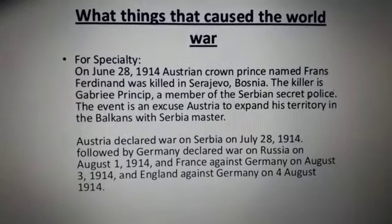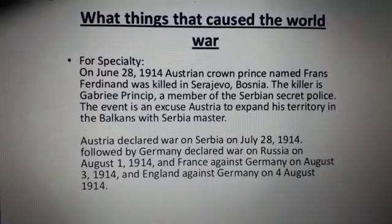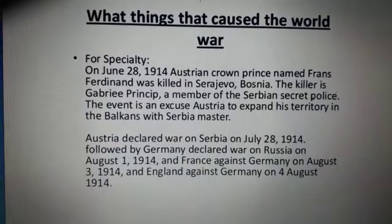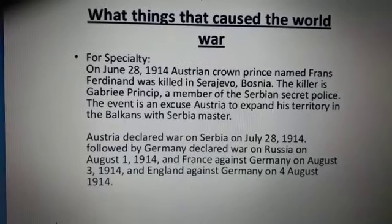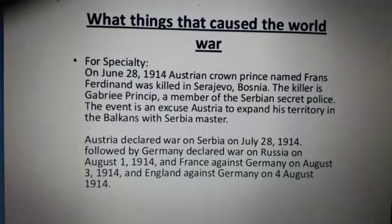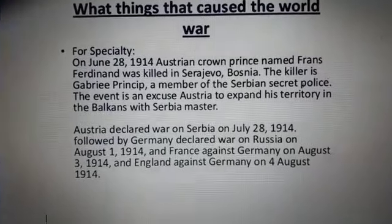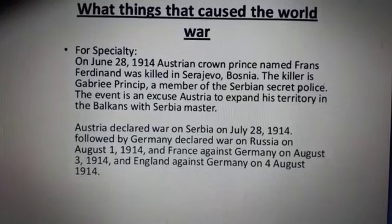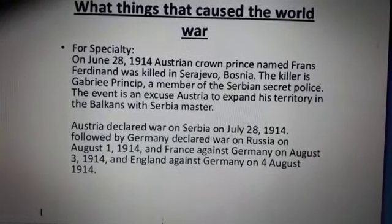The Crown Prince of Austria was killed in Bosnia by a Serbian soldier. Hence Austria declared war on Serbia on July 28, 1914. Germany declared war on Russia on August 1, 1914, and France and England declared war on Germany.